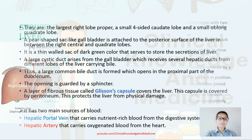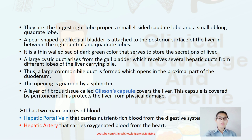The three lobes of the right side are: the largest right lobe proper, a small four-sided quadrate lobe, and a small oblong caudate lobe. The gallbladder is a pear-shaped structure attached to the posterior surface of the liver between the right and quadrate lobes. It is a thin-walled sac of dark green color that serves to store the secretions of the liver. A large cystic duct arises from the gallbladder, which receives several hepatic ducts from the different lobes of the liver, carrying bile.